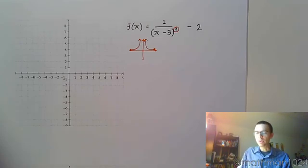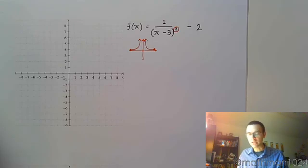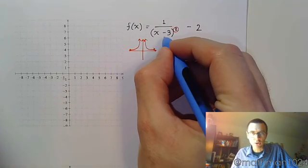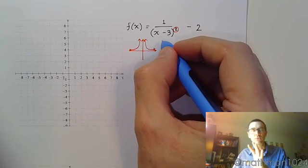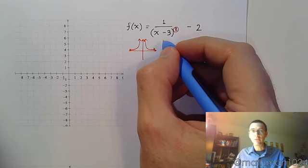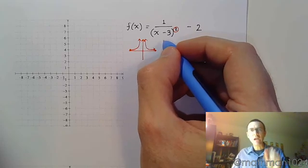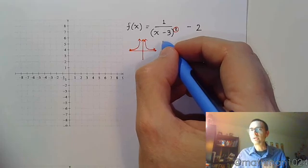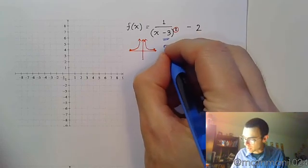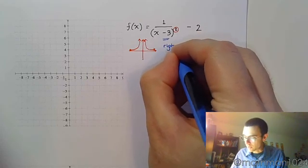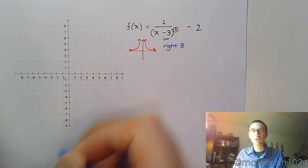Where is that shape going to be located? Let's look inside and see. Inside this square, I see a minus 3. The same rules for shifting graphs still apply here. If it's inside, that's a horizontal shift — opposite of what you see. So I see a minus 3, and I do the opposite, which means I'm going to shift horizontally to the right three units.